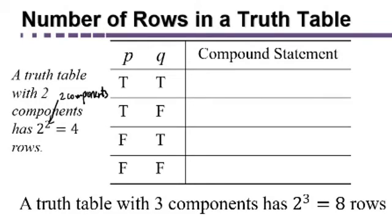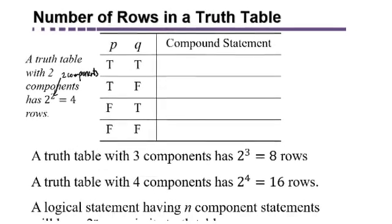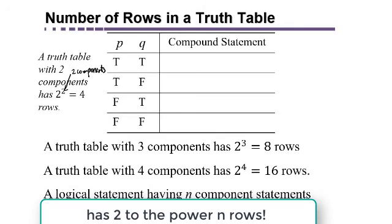A truth table with three components has two to the third equals eight rows. A truth table with four components would have two to the fourth equals 16. And it would go on from there. But we generally keep it down to four at the very most and you won't have very many of those.